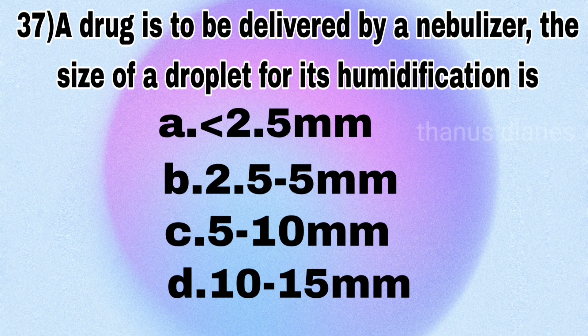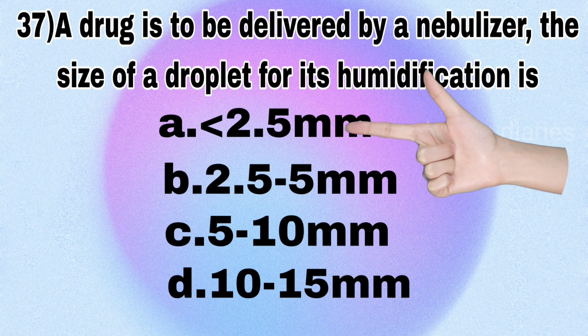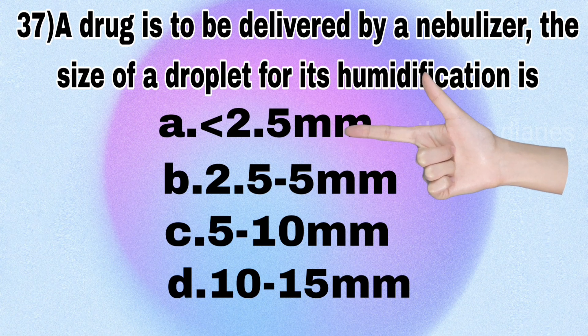Next question: a drug has to be delivered by a nebulizer. The size of droplet for humidification is — less than 2.5 mm, 2.5–5 mm, 5–10 mm, or 10–15 mm? It's less than 2.5 mm.